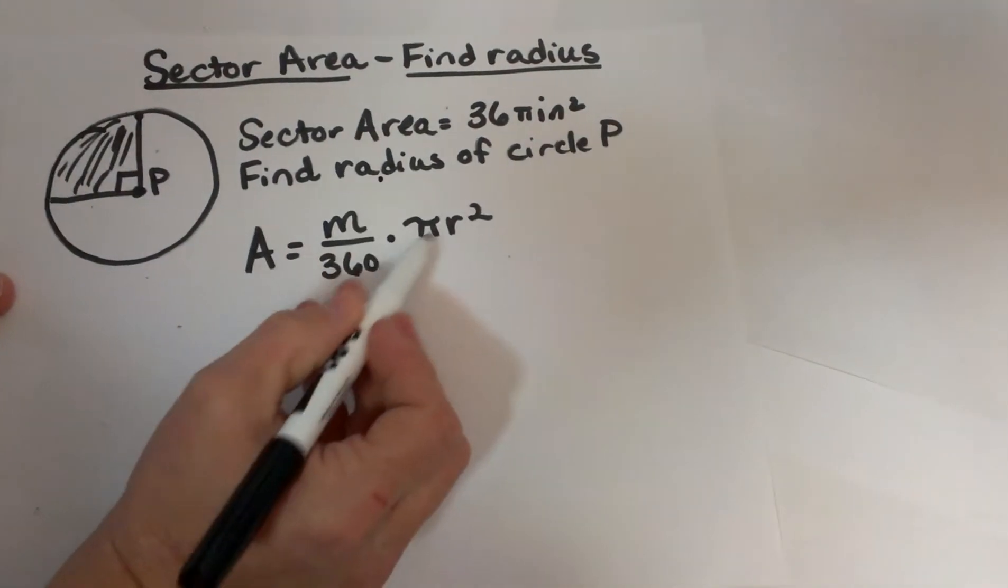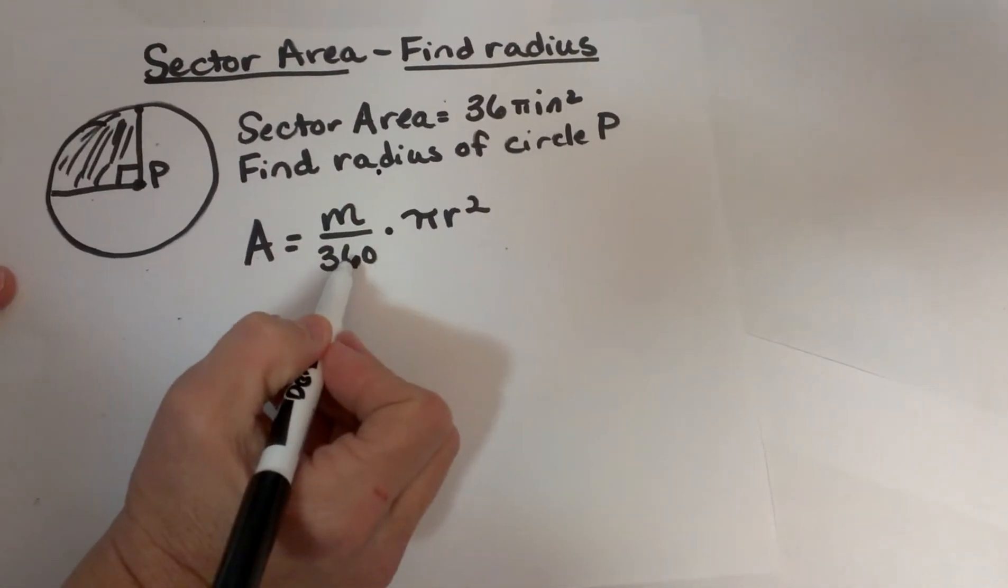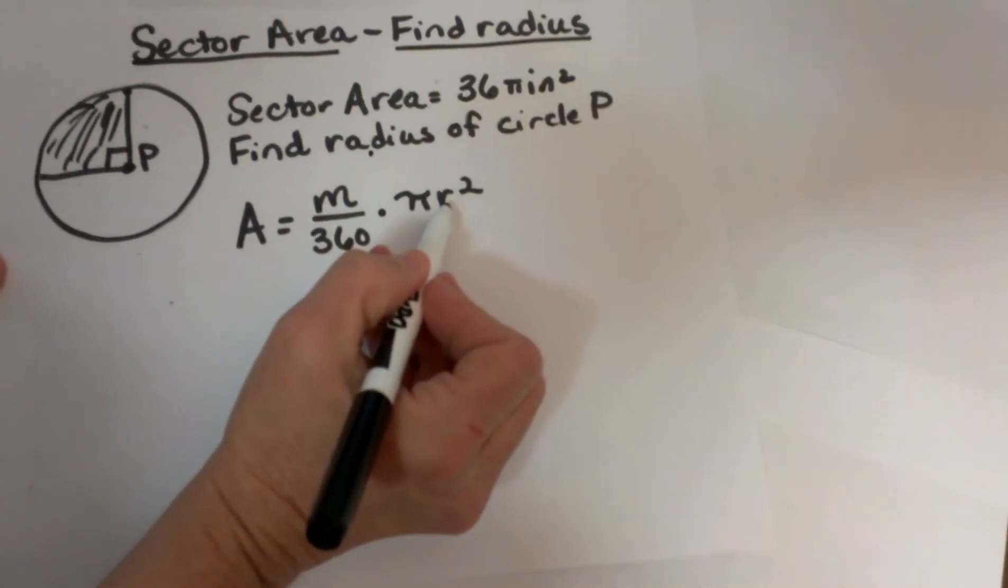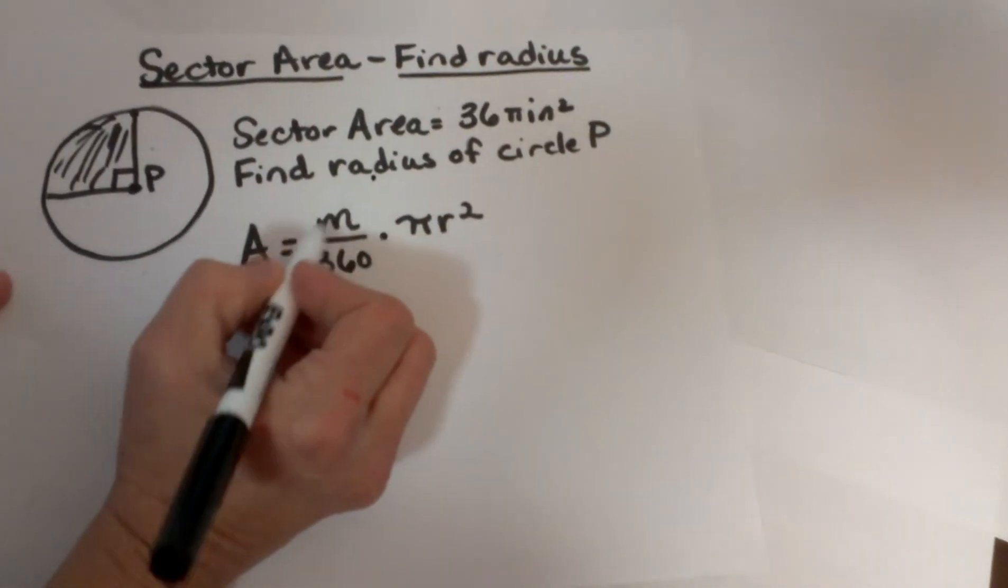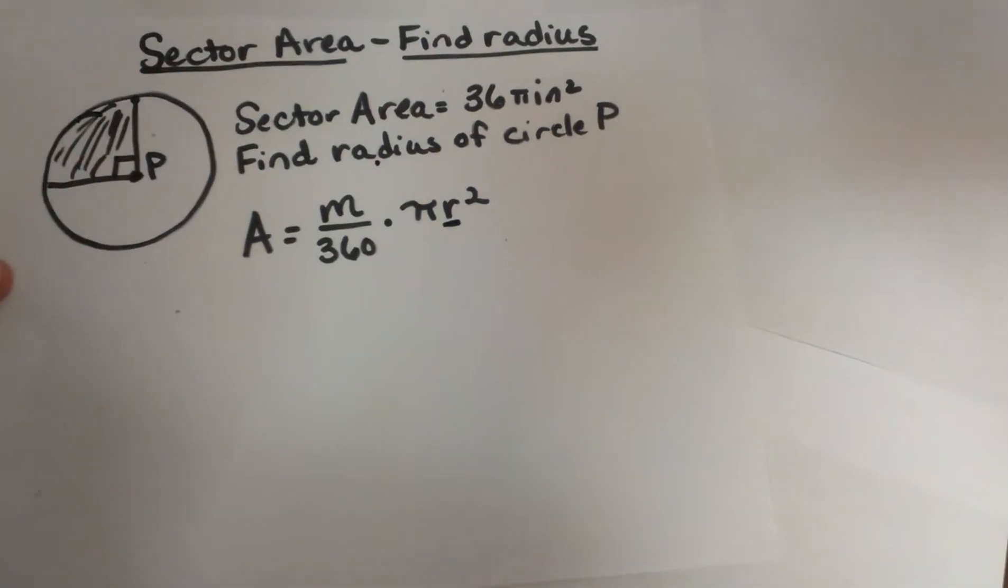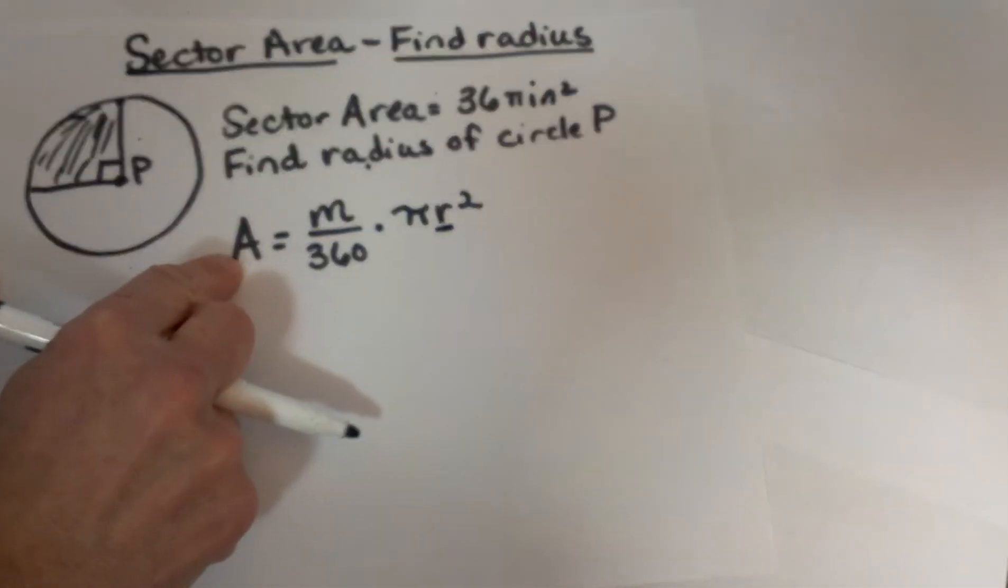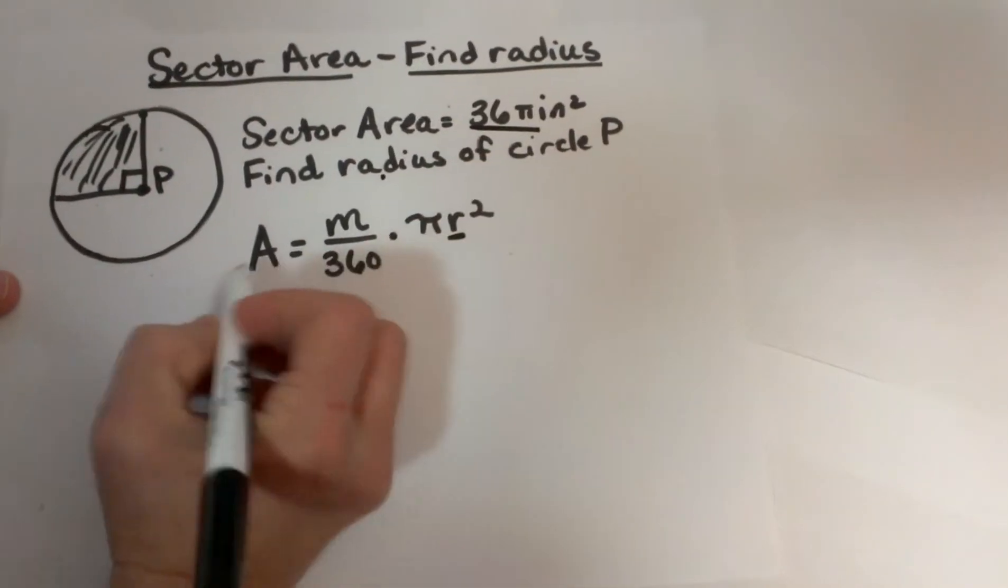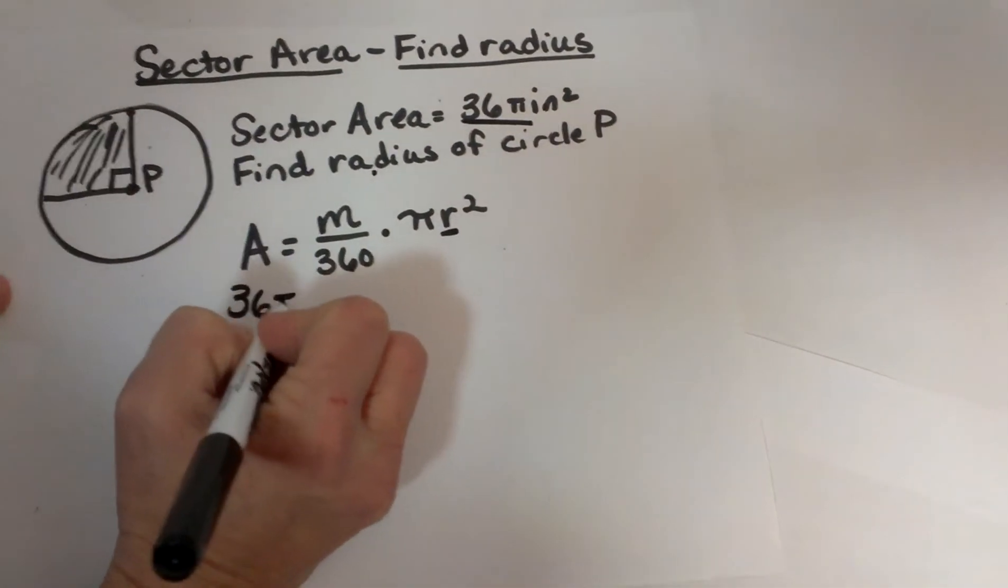We are going to start off with the sector area formula which is the measure over 360 times πr². We don't know our radius so that is going to be the variable we leave in the problem. But we do know the area. The area is 36π so let's plug in 36π here.